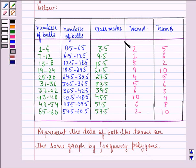Now we see that for team A we have to plot the points 3.5, 2, 9.5, 1, 15.5, 8 and so on till 57.5 and 2.